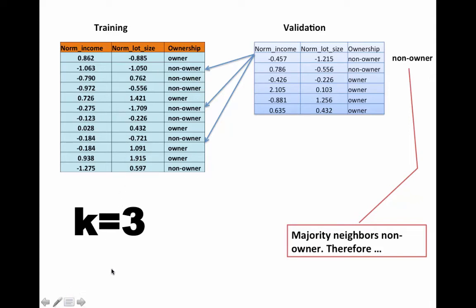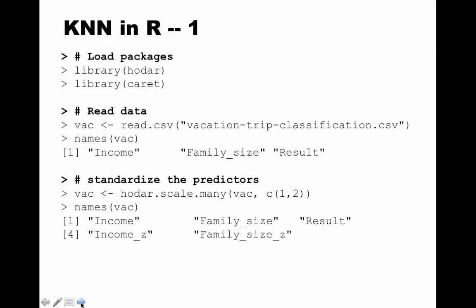We've seen the concepts of the k-nearest neighbors technique. Now let's see how to implement it in R. We load our library hodar, and we also load the caret package because that's required for partitioning.